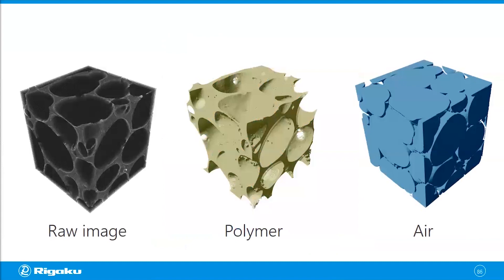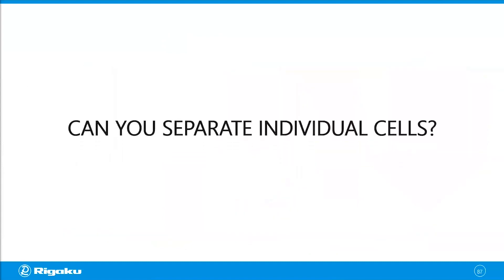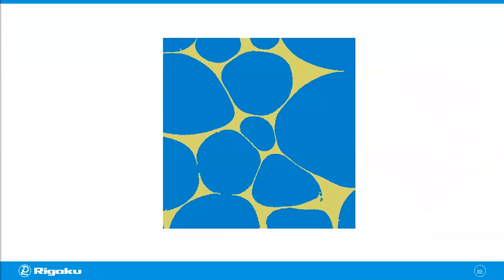Now you might wonder: can you separate those individual cells? Yes, and there are many ways to do this. When objects are not too strongly connected, you can apply an open operation to separate them. But in this particular case, some cells are pretty well connected with multiple voxels connecting them. When this happens, a simple open operation won't work. Let's look at an example using Avizo from Thermo Fisher, because the way this program handles object separation is less of a black box — you can see how the program does it.